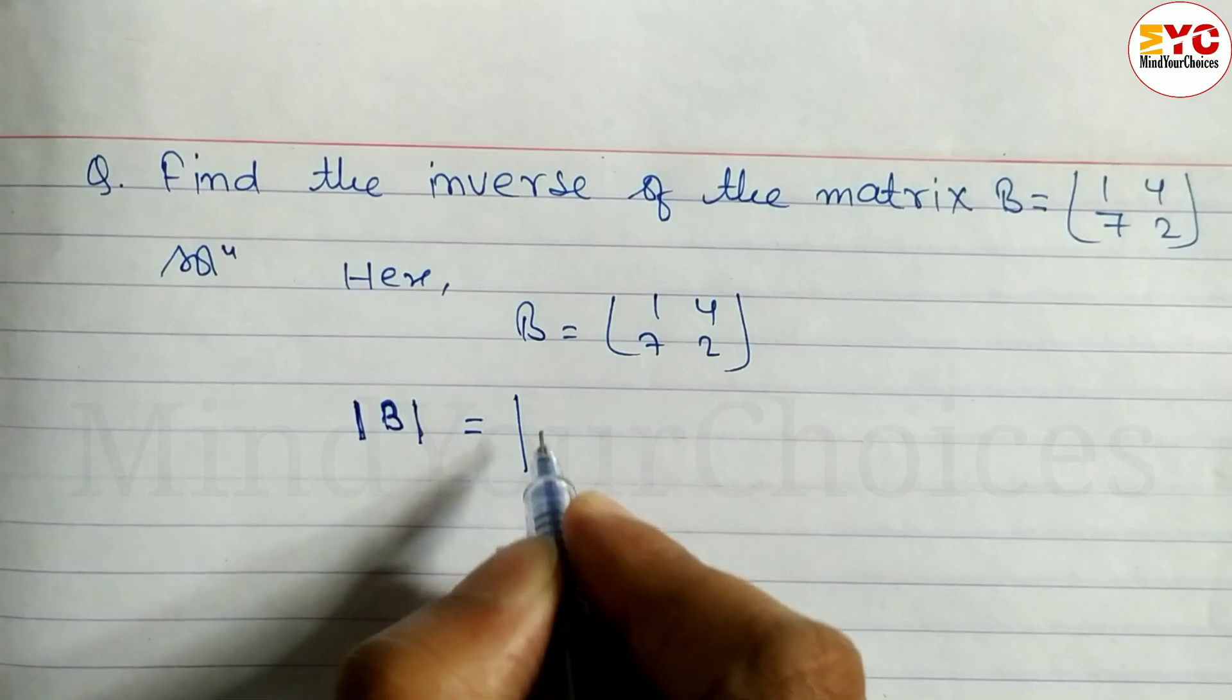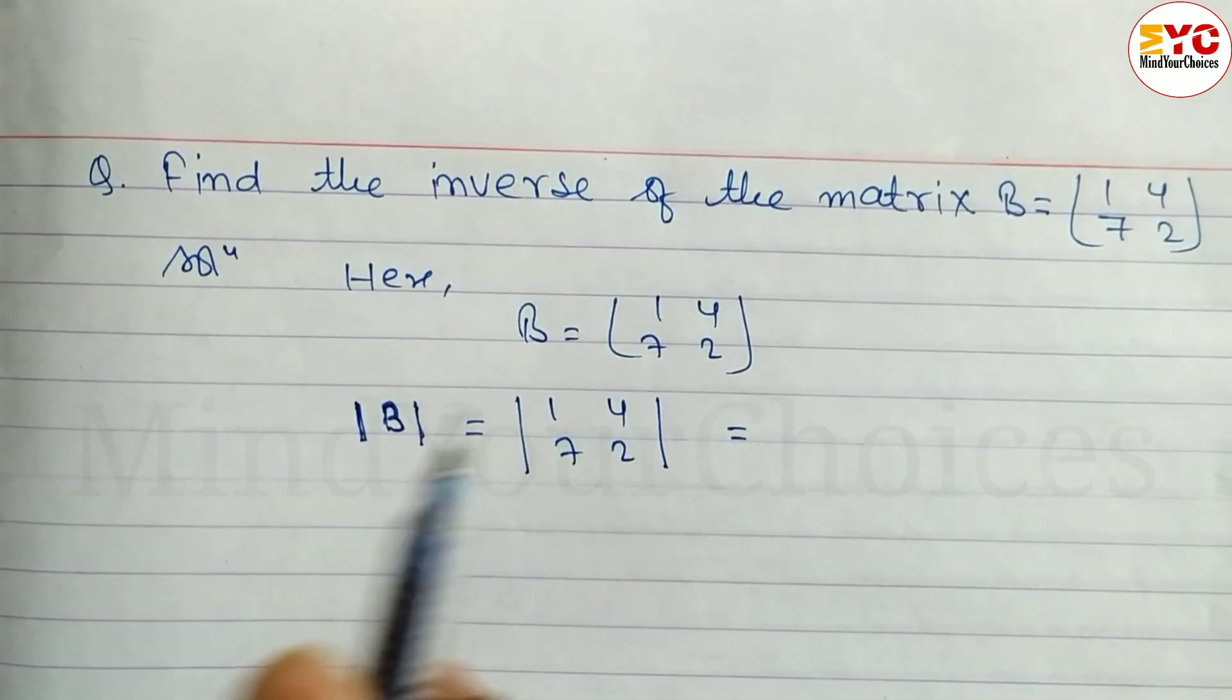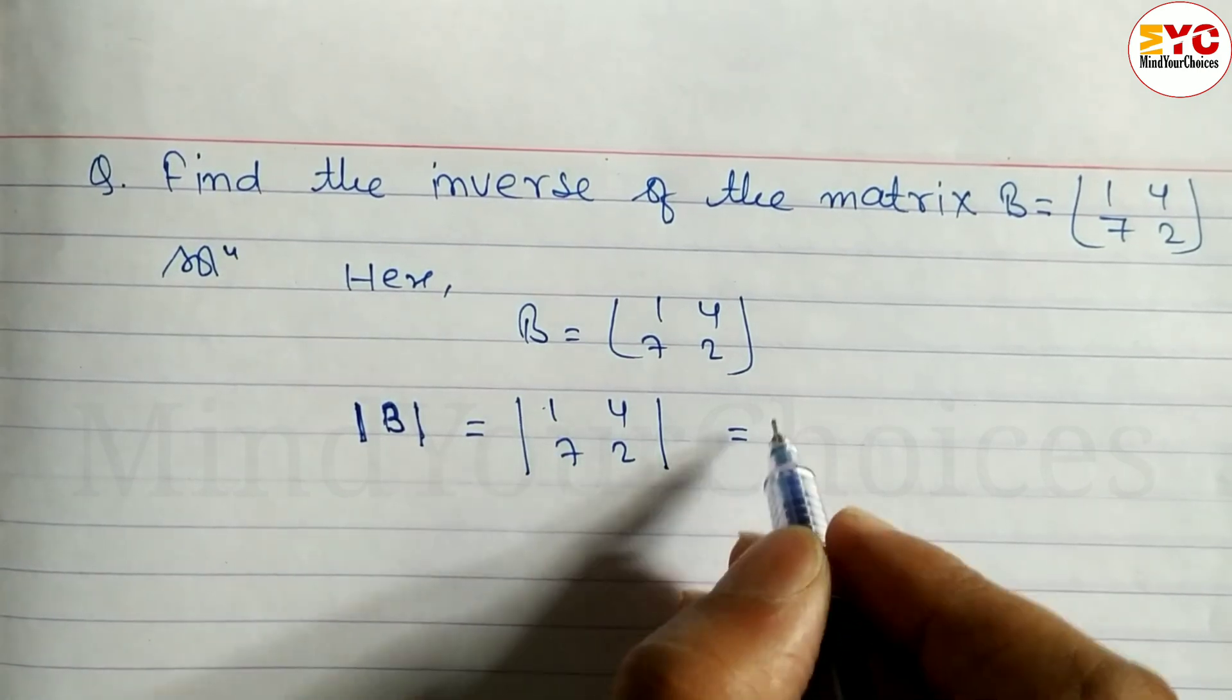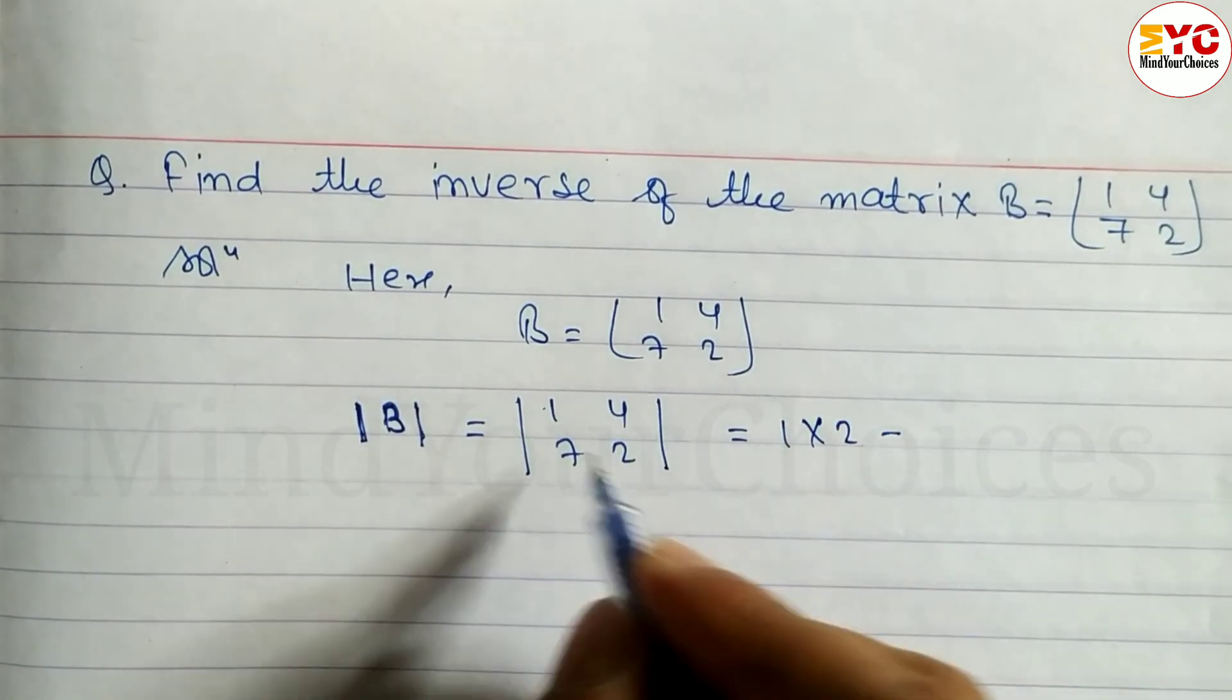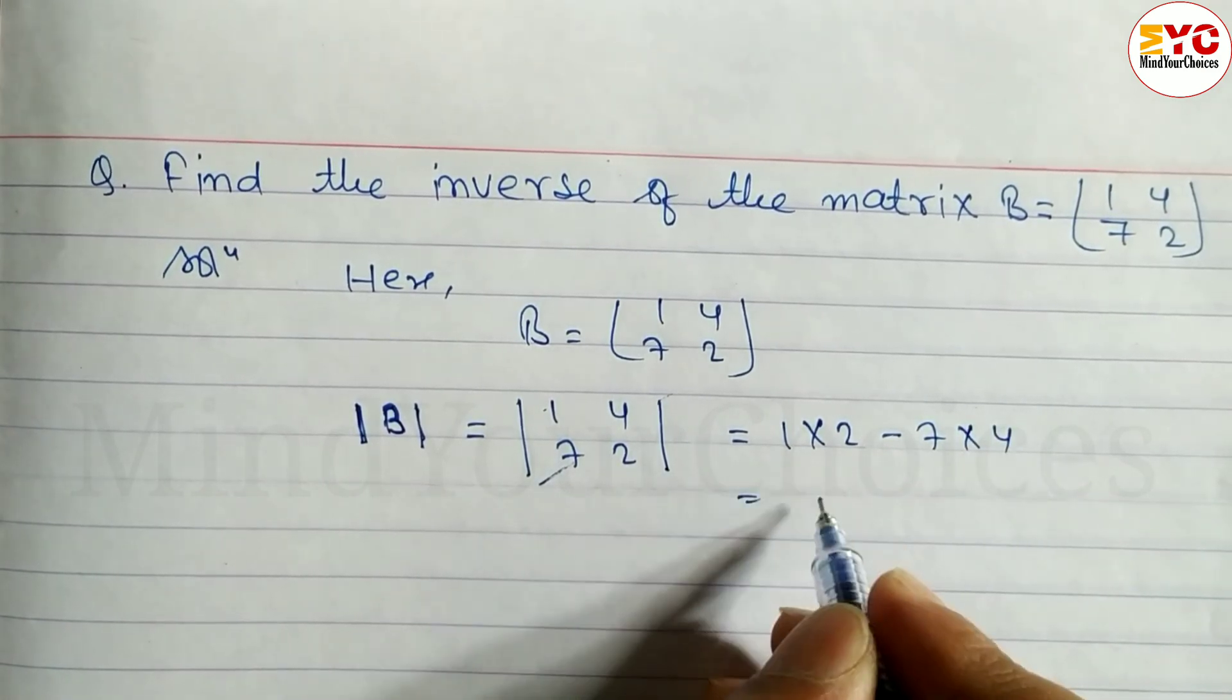Here we have [1 4; 7 2]. Let's find the determinant. To find the determinant we multiply the main diagonal: 1 times 2, minus the non-diagonal: 7 times 4.